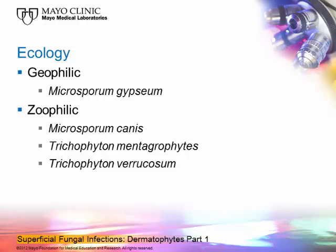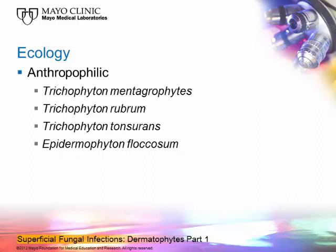The anthropophilic group infects humans only. The three exclusively human-infecting species are Trichophyton rubrum, Trichophyton tonsurans, and Epidermophyton floccosum. Trichophyton mentagrophytes can infect animals as well as humans, so there is some overlap between groups — they don't fit neatly into compartments.